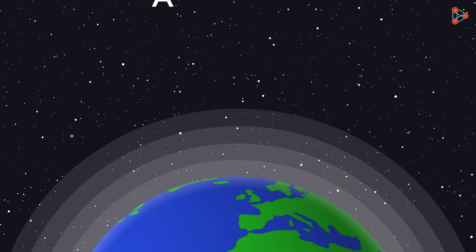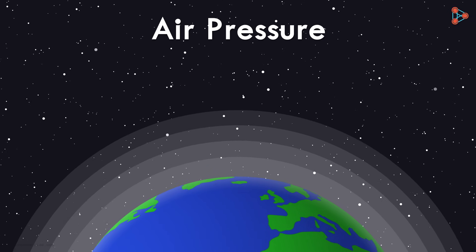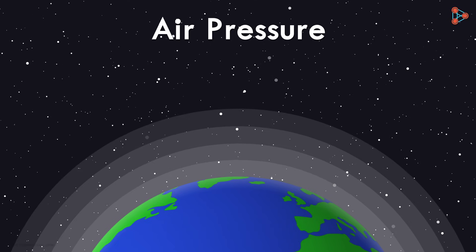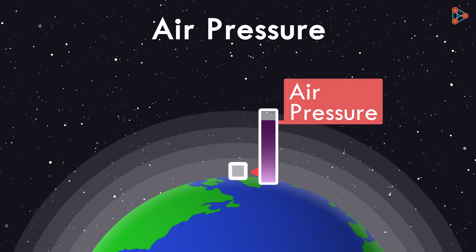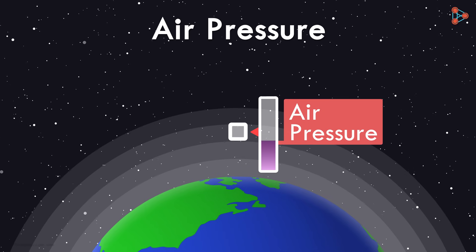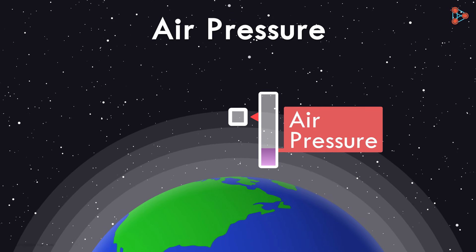In our previous lesson, we discussed air pressure. The air pressure is not even in all places. To understand this, we discussed how the level of air pressure decreases as we move upwards in the atmospheric layers.